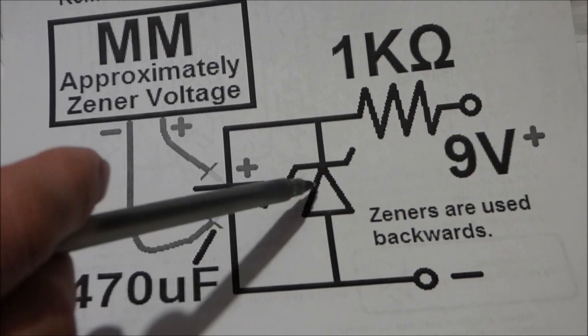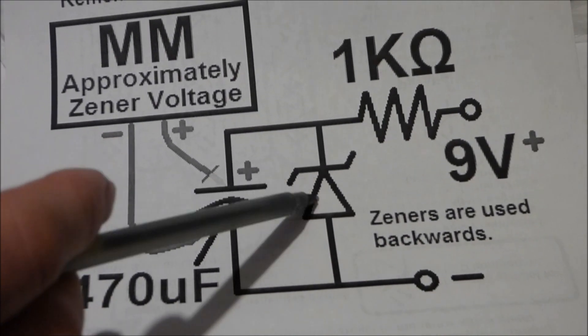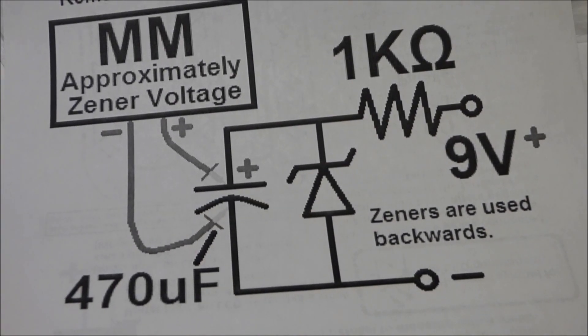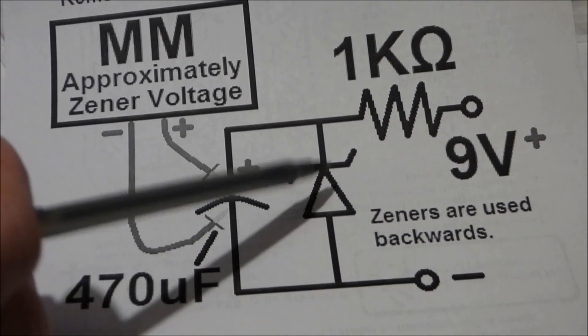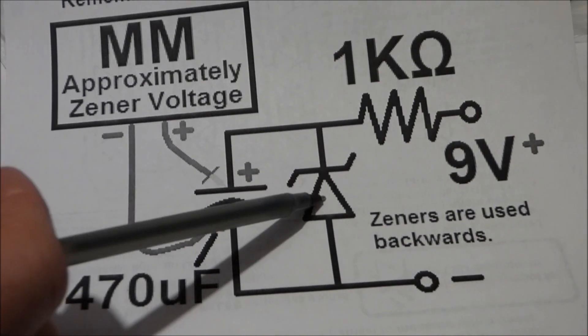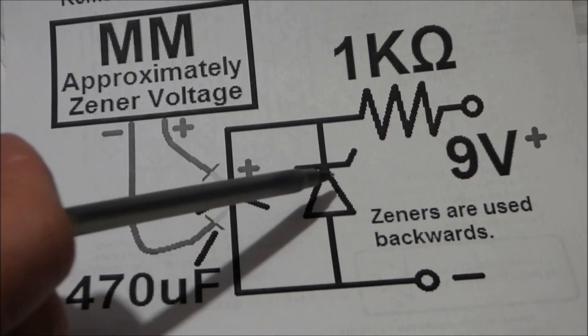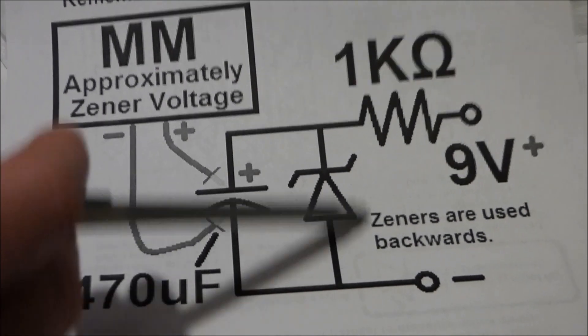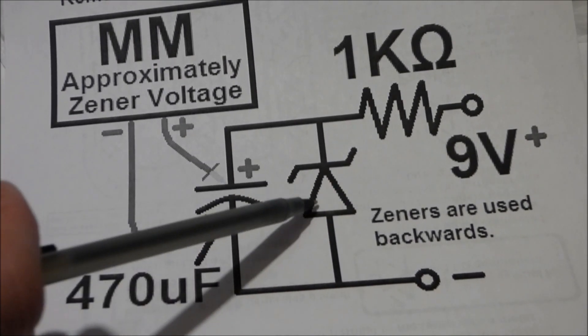So that's just something to be aware of. But all we're doing here is we wanted to get an approximation of what the Zener diode could be if you're not sure, and it's a good test circuit just to do for experience anyways.